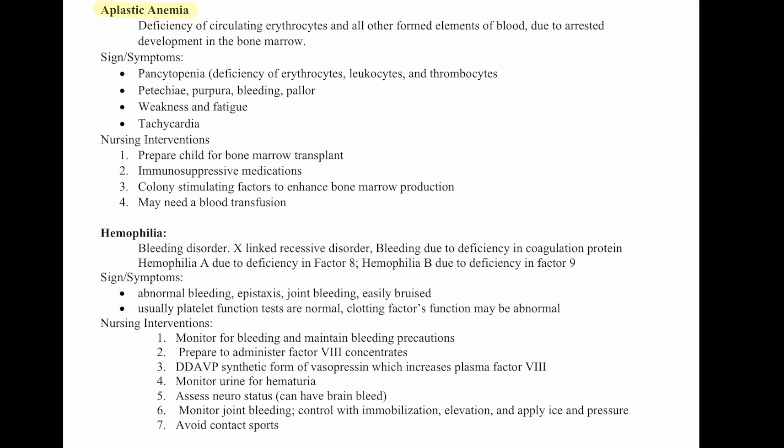Aplastic anemia is a deficiency of circulating erythrocytes and all other formed elements of the blood due to arrested development in the bone marrow. Signs and symptoms are pancytopenia — deficiency of erythrocytes, leukocytes, and thrombocytes — along with petechiae, purpura, bleeding, pallor, weakness, fatigue, and tachycardia. Nursing interventions include preparing the child for a bone marrow transplant, immunosuppressive medications, colony-stimulating factors to enhance bone marrow production, and blood transfusions as needed.